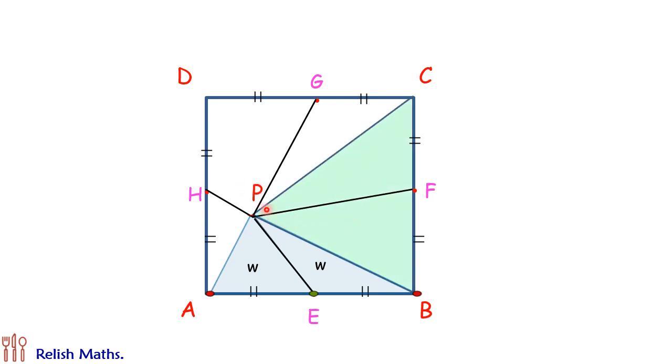Same way, when we are joining PC, now in this green triangle, PF is your median and F is basically the midpoint, so it will divide the triangle into two equal areas. Let's call it as x and x.